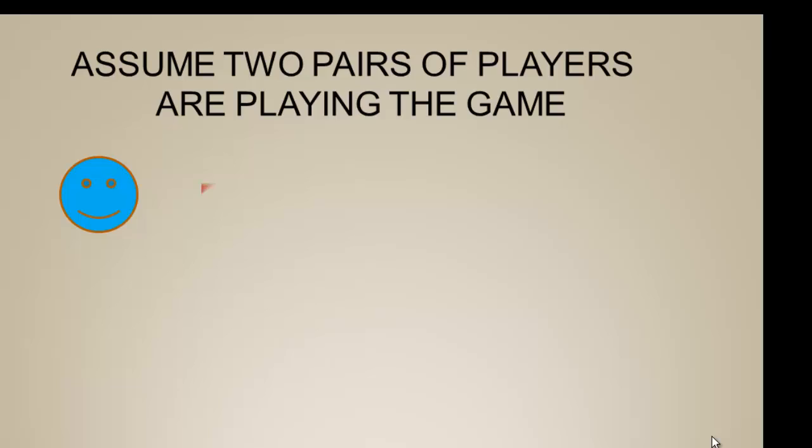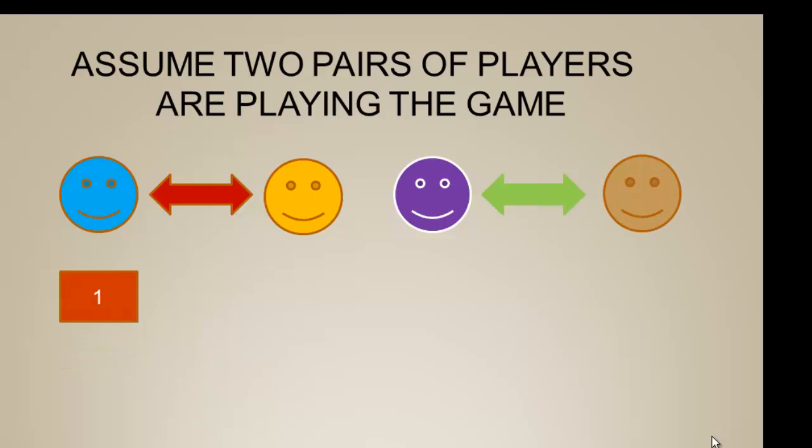If we put this in a larger context so that there's more than one pair of players competing, here we have blue and orange always holding the card and not cooperating, and over here we have purple and brown always playing their card. Well, then at each round of the game, blue and orange are going to each earn one point, whereas purple and brown are going to earn five points.